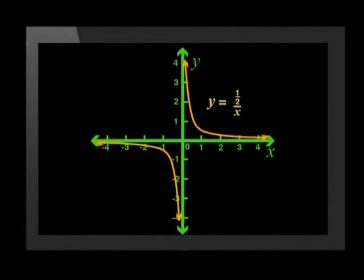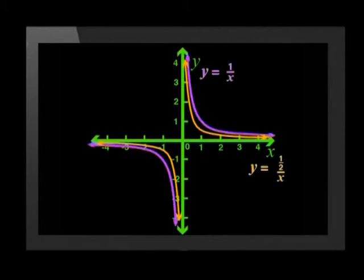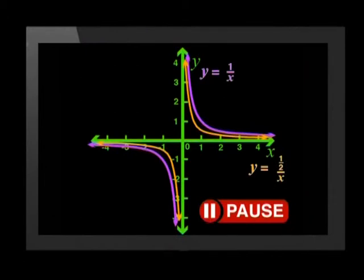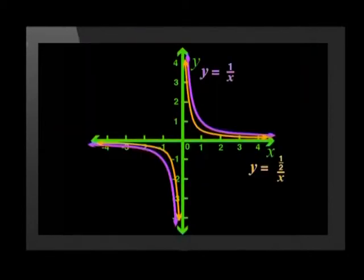Here is the graph of y equal to a half divided by x, compared to the graph of the parent graph. Is that what you thought it would look like? Sort of, I guess. See if you can describe the changes that a equal to a half have made to the graph. Well, the graph still has the same shape. It doesn't cross the axes, so there are still asymptotes. It is still in the first and third quadrants of the Cartesian plane. That's great! Anything more?